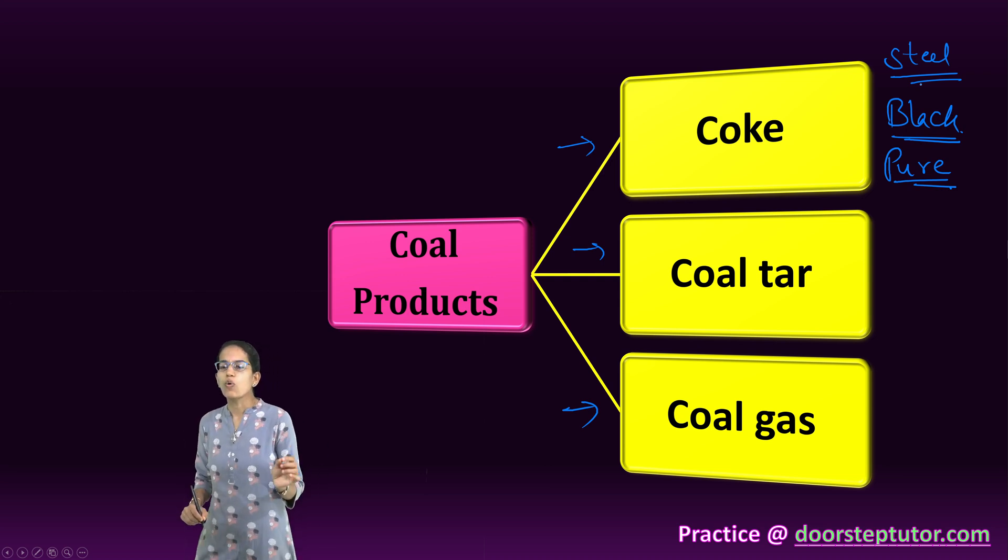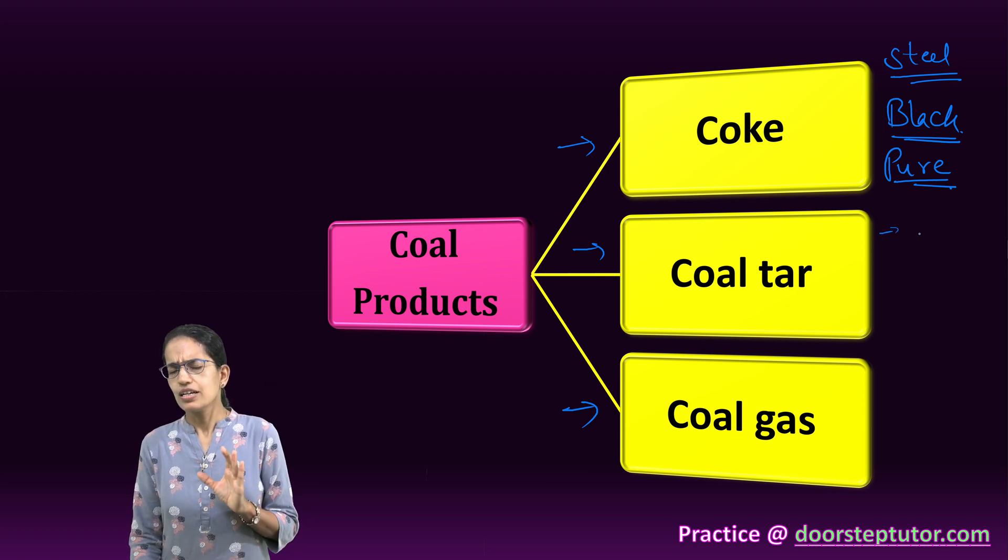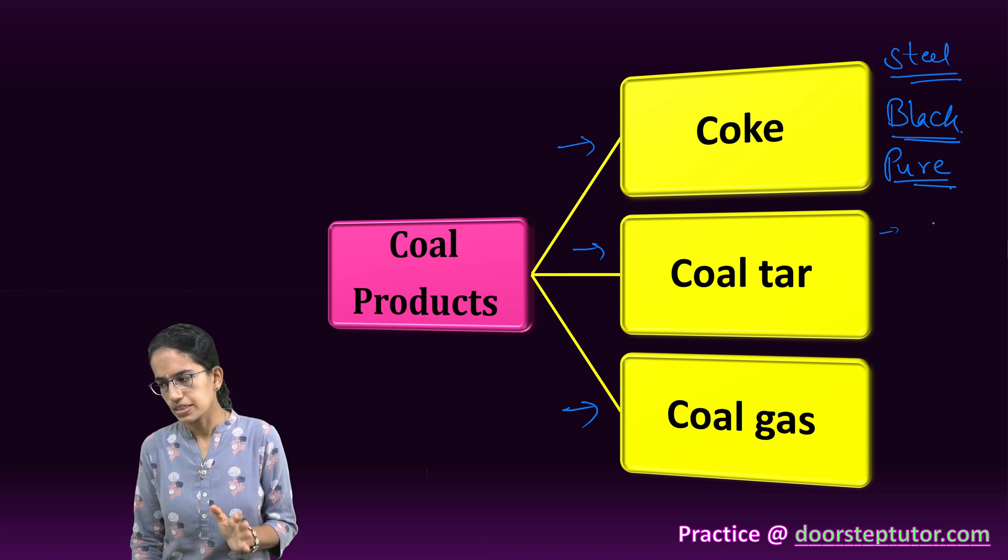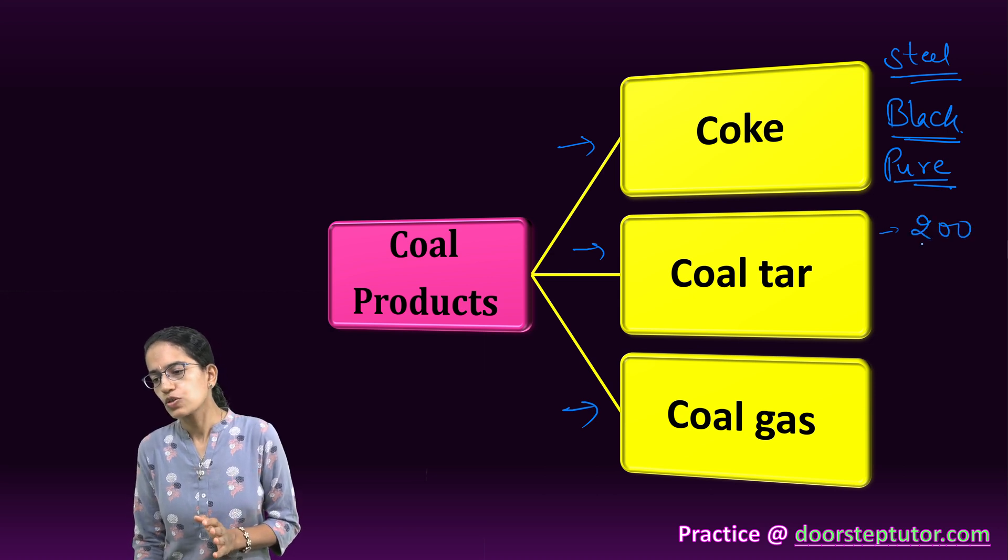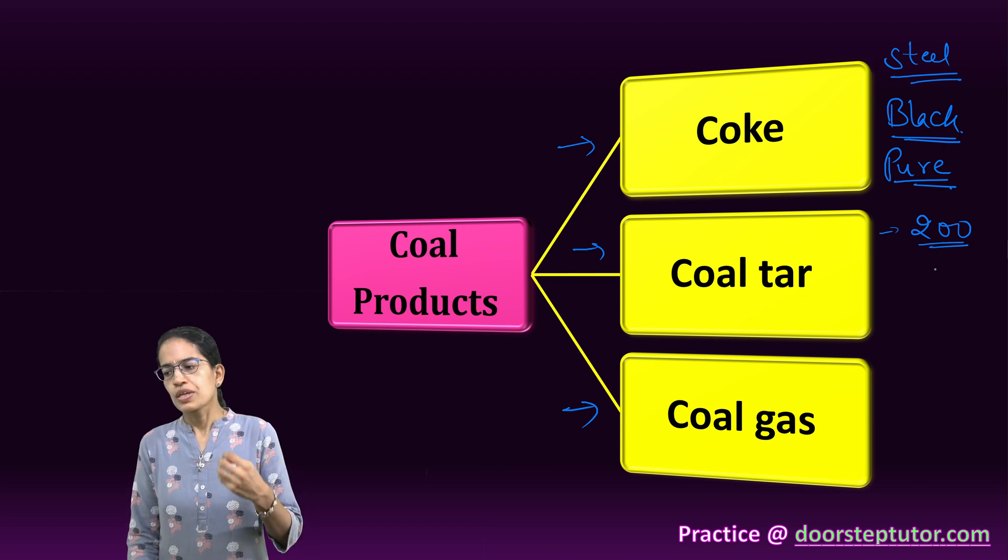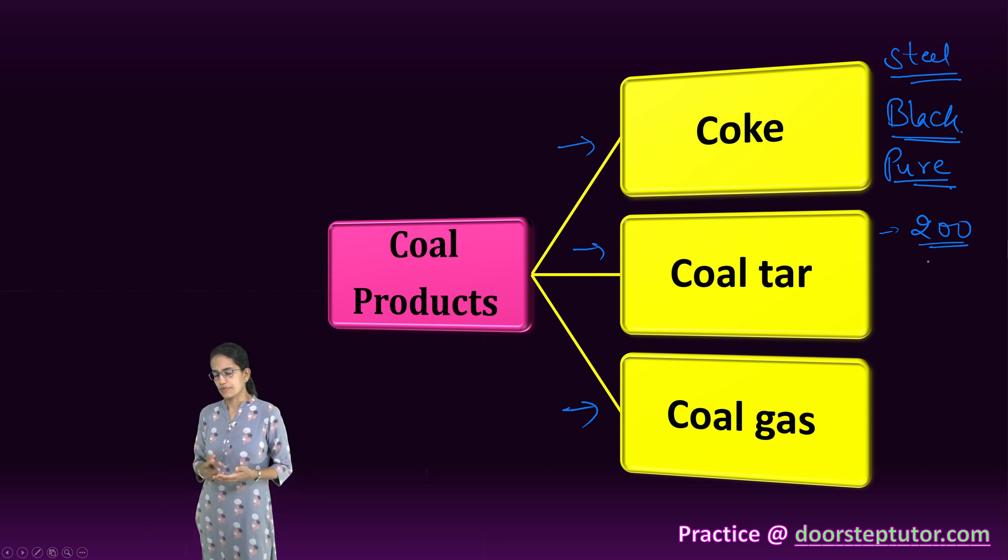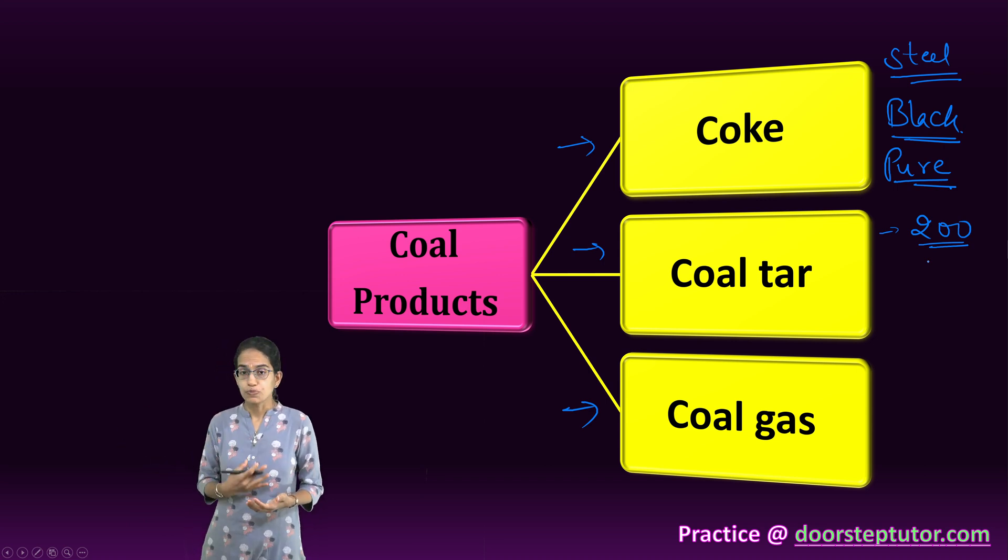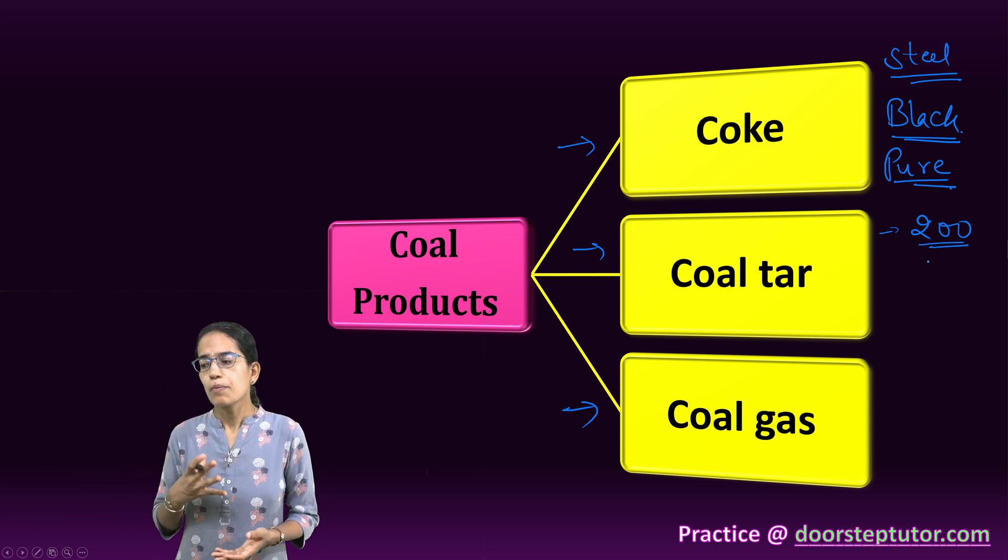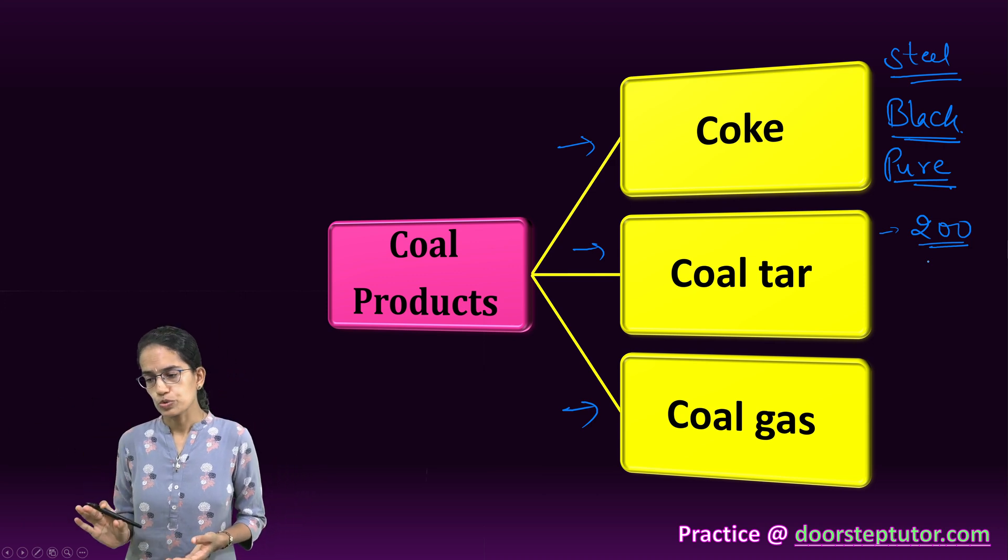Coke is used for extraction of various metals used in the process of steel manufacturing. In steel manufacturing, coke is an important constituent. The next is coal tar. Coal tar is a thick, liquid, blackish in color with a very foul smell, an unpleasant smell. It has nearly 200 substances that are mixed into it.